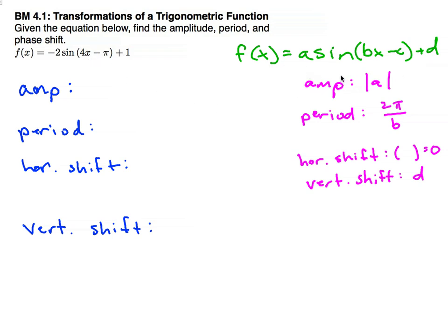Here's the standard form of a sine function, and each one of these letters represents something. The amplitude we can find by taking the absolute value of a, the period we can find by taking 2 pi divided by b, and it's 2 pi because the normal cycle for sine is 2 pi.